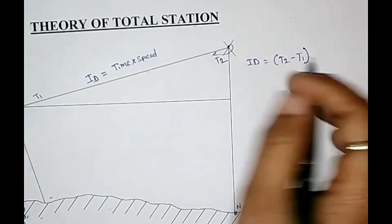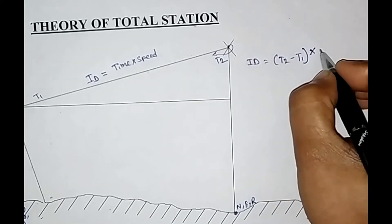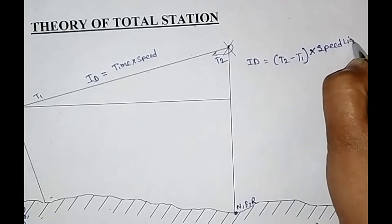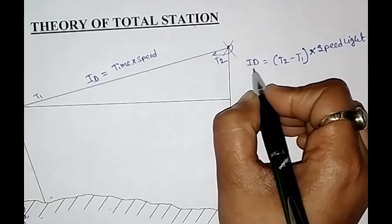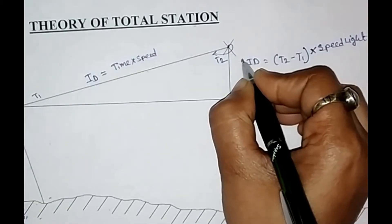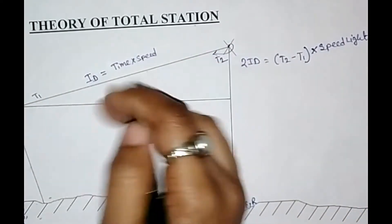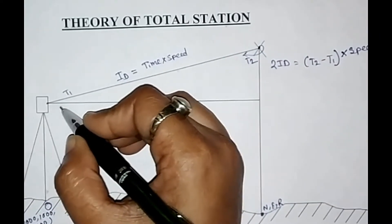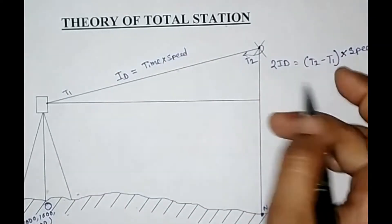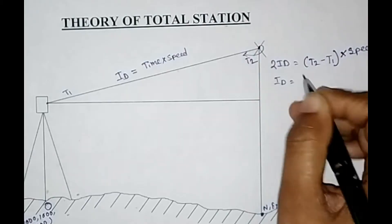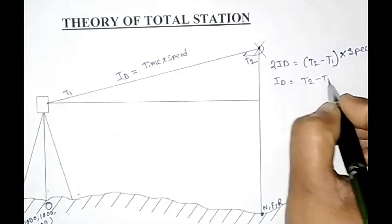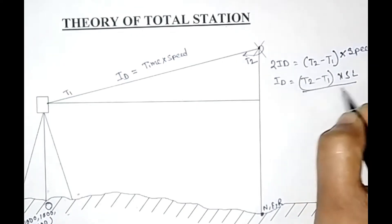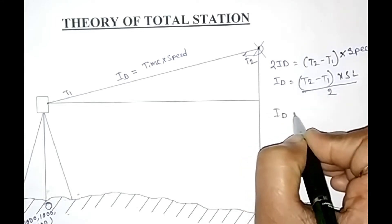If we multiply the time difference by the speed of the ray or light, we get the inclined distance. But this distance is twice the actual distance because the ray travels to the target and reflects back. So to find the inclined distance only, we calculate: ID = (T2 − T1) × speed of light / 2. In this manner, we get the inclined distance.